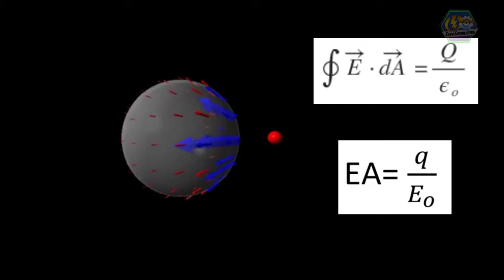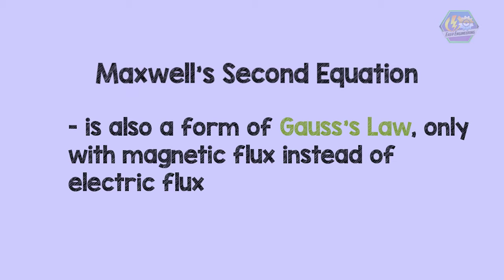Now let's proceed to the second equation. Maxwell's second equation is also a form of Gauss's law, only with magnetic flux instead of electric flux. As we have discussed before, magnetic sources are always dipoles, which means they have a north and south pole.